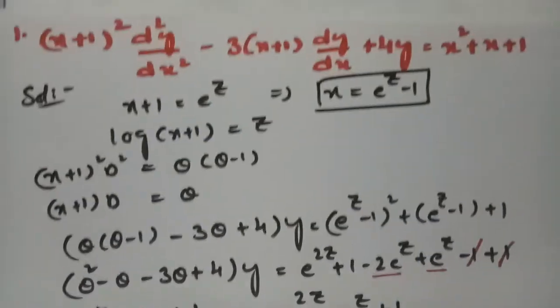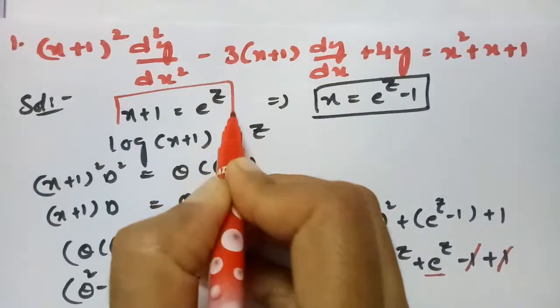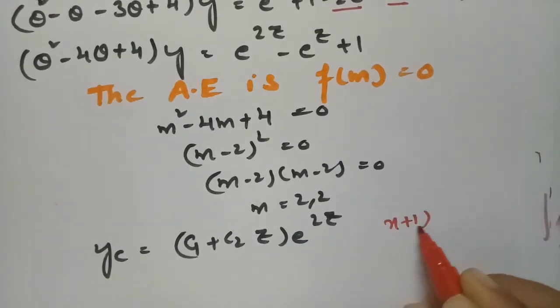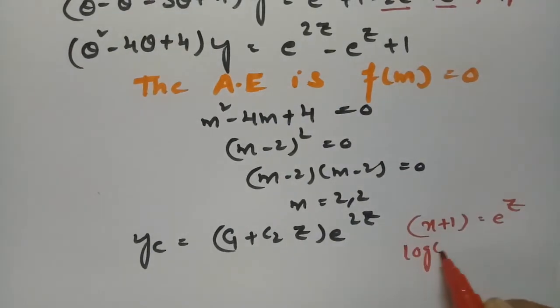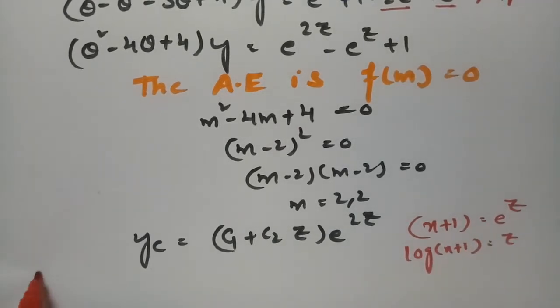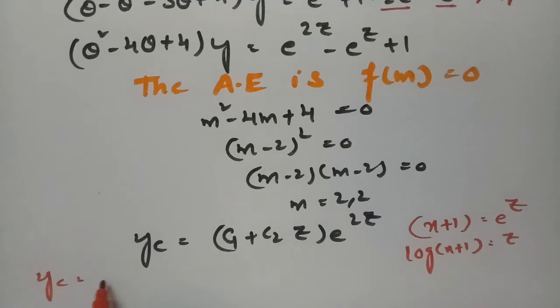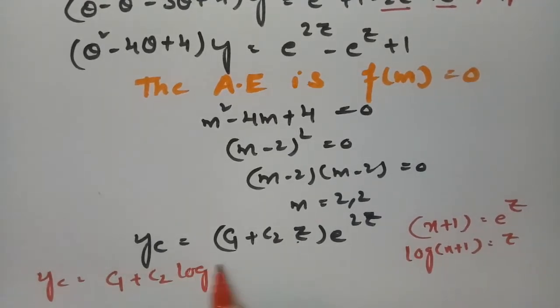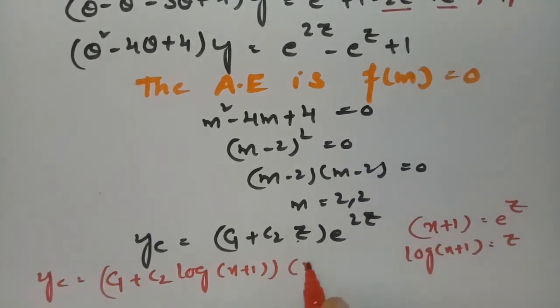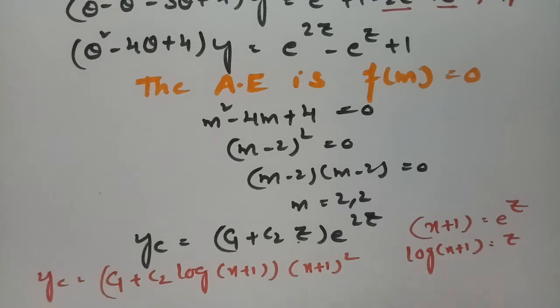Since we have equal roots, the complementary function is yc = (c1 + c2·z) · e^(2z). Back-substituting using x + 1 = e^z and z = log(x + 1), this becomes yc = [c1 + c2·log(x + 1)] · (x + 1)². This is equation (a).